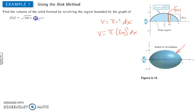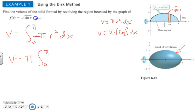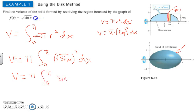To find the overall volume of all these disks, the volume equals the integral from 0 to pi of pi r squared dx. Since pi is a constant, it comes out front, giving us pi times the integral from 0 to pi of the square root of sine x squared dx, which simplifies to pi times the integral from 0 to pi of sine x dx.